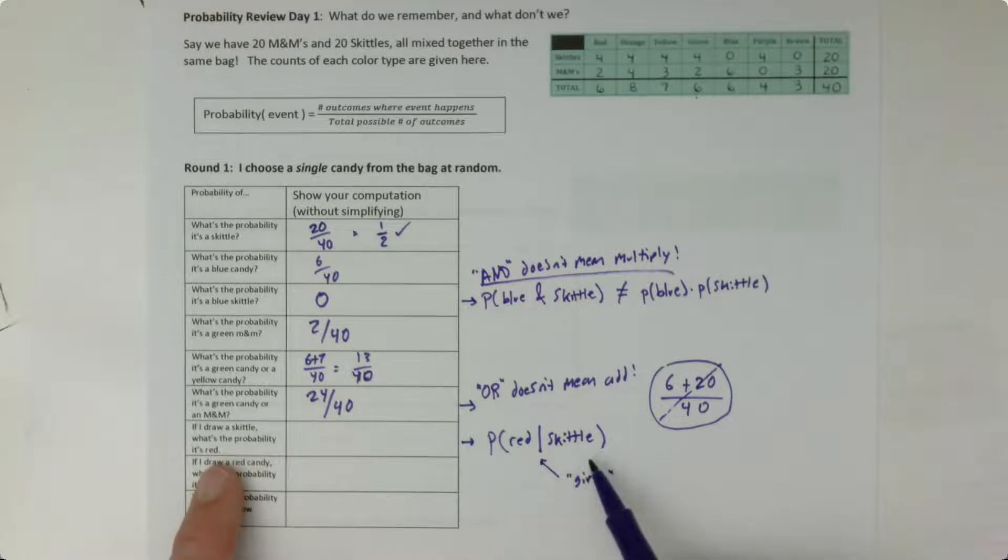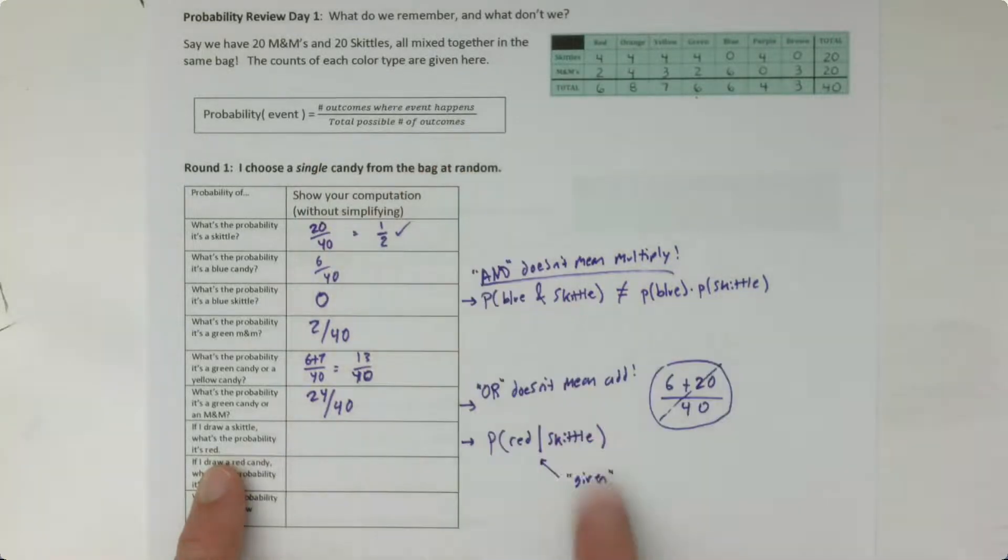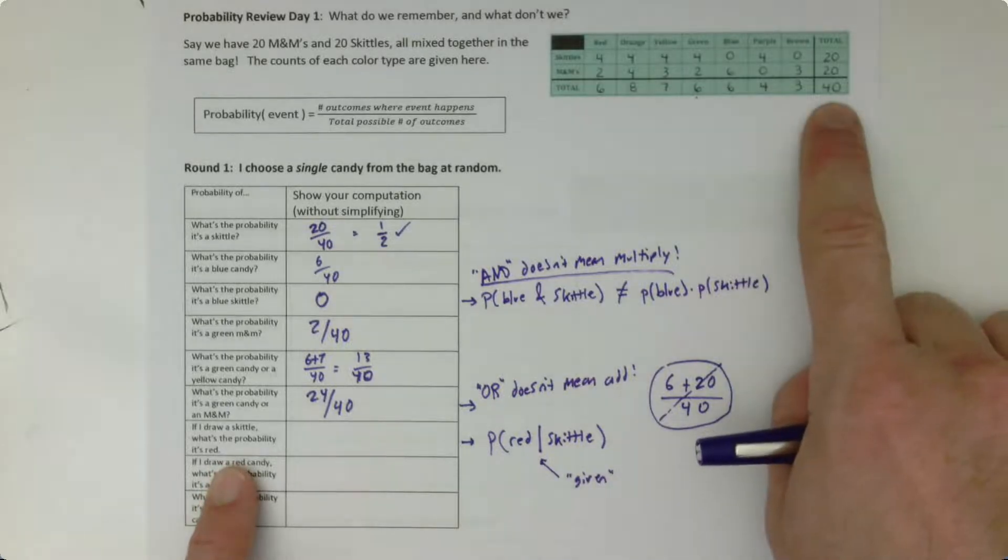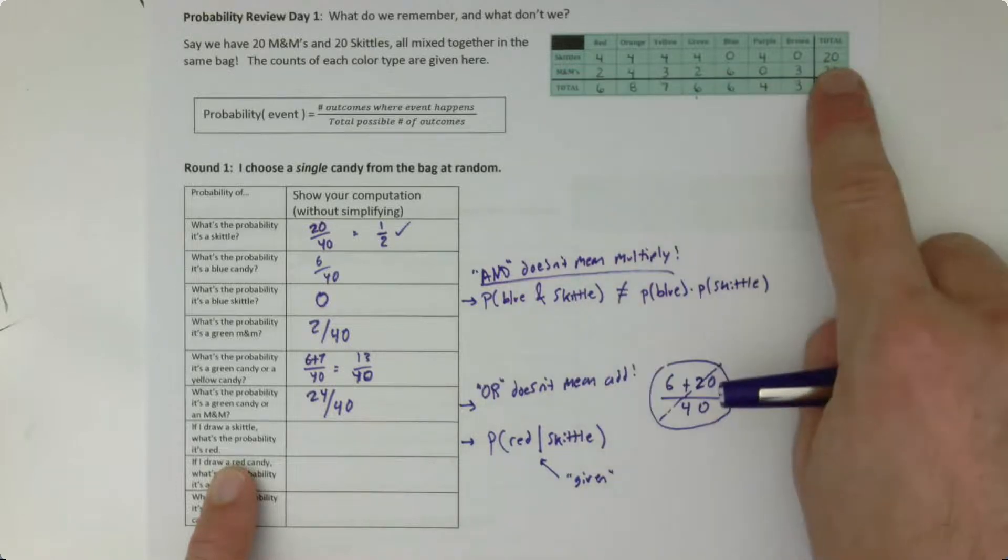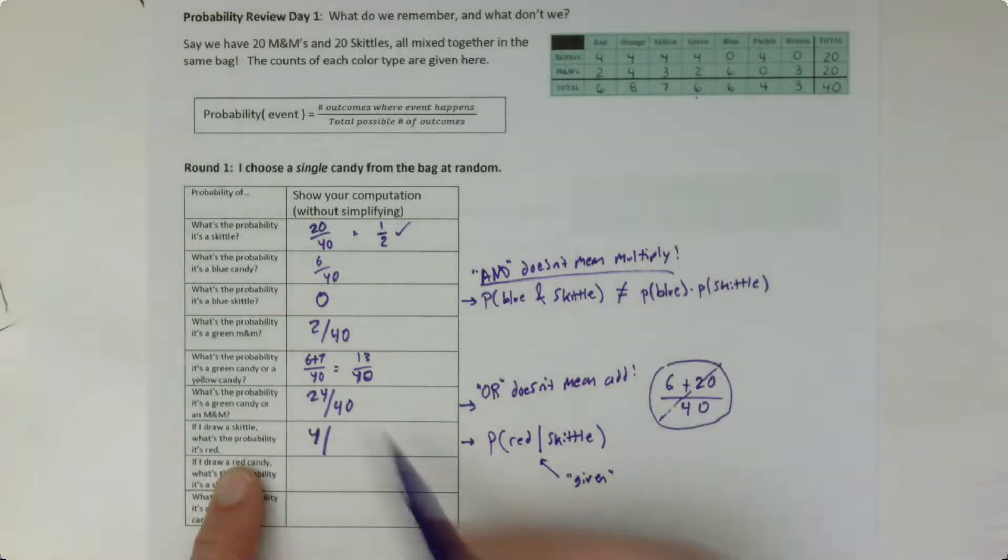So what's the probability of being red, given that you have already drawn a Skittle? So the thing afterwards is a condition that we assume is already true. And that modifies the pool of total possible outcomes, because if we already know that it's a Skittle, I'm not looking to divide by 40 possible things I might have drawn, because there's only 20 possible Skittles. So here I'd look at how many red Skittles there are, that's four, divided by how many total Skittles there are, which is 20.